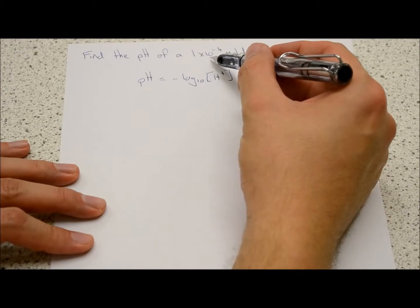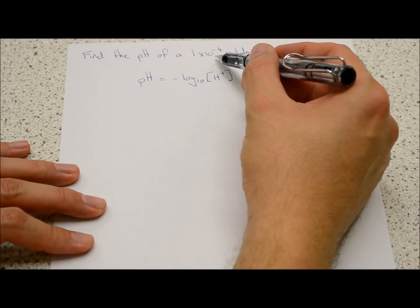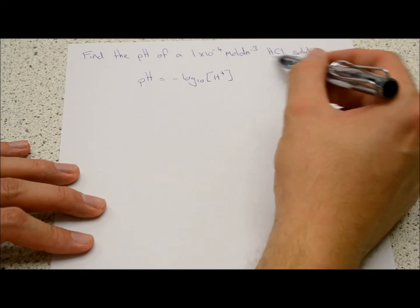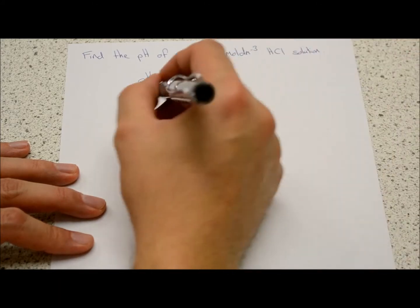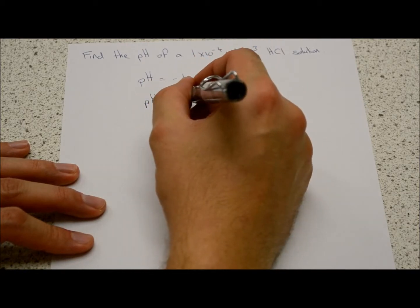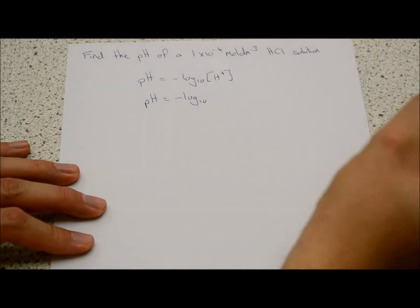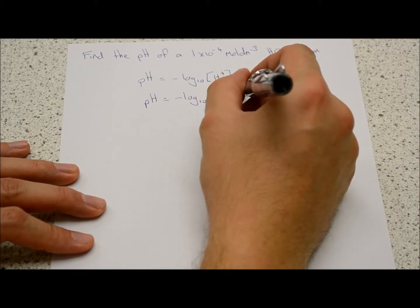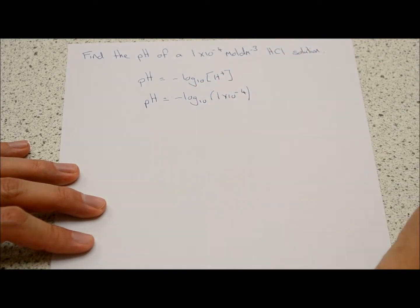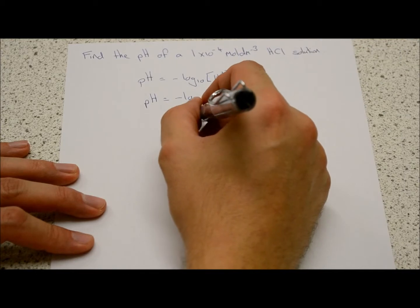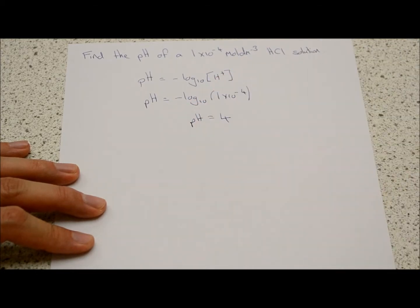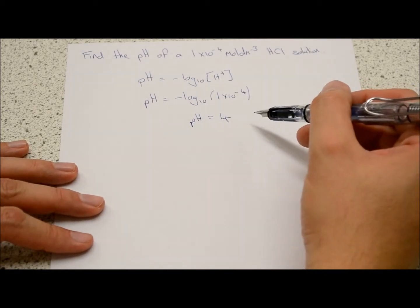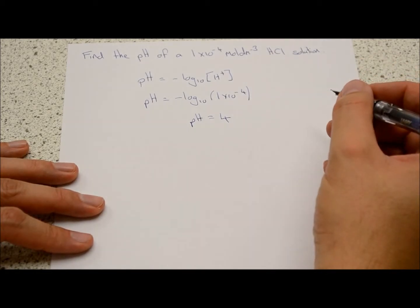We know that the concentration of HCl is 1×10⁻⁴, and there's only one proton per molecule, so pH equals minus log base 10 of 1×10⁻⁴, which gives us a pH of 4. Make sure when you calculate that you get the same answer to check your calculator is working properly.